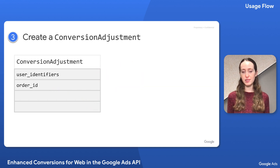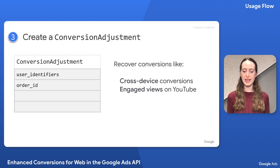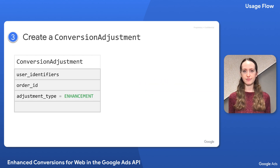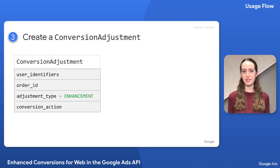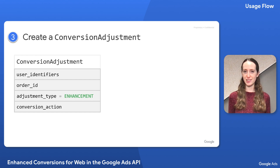As a result, Google Ads can recover conversions that might have otherwise been missed — for example, cross-device conversions or engaged views on YouTube. Going back to our conversion adjustment, there are two other required fields. You'll need to set adjustment type to enhancement and then set conversion action to the resource name of an enabled web page conversion action, the same one that you used in conversion tagging. If you're not sure how to create or find the conversion action, check out our intro video to learn more.